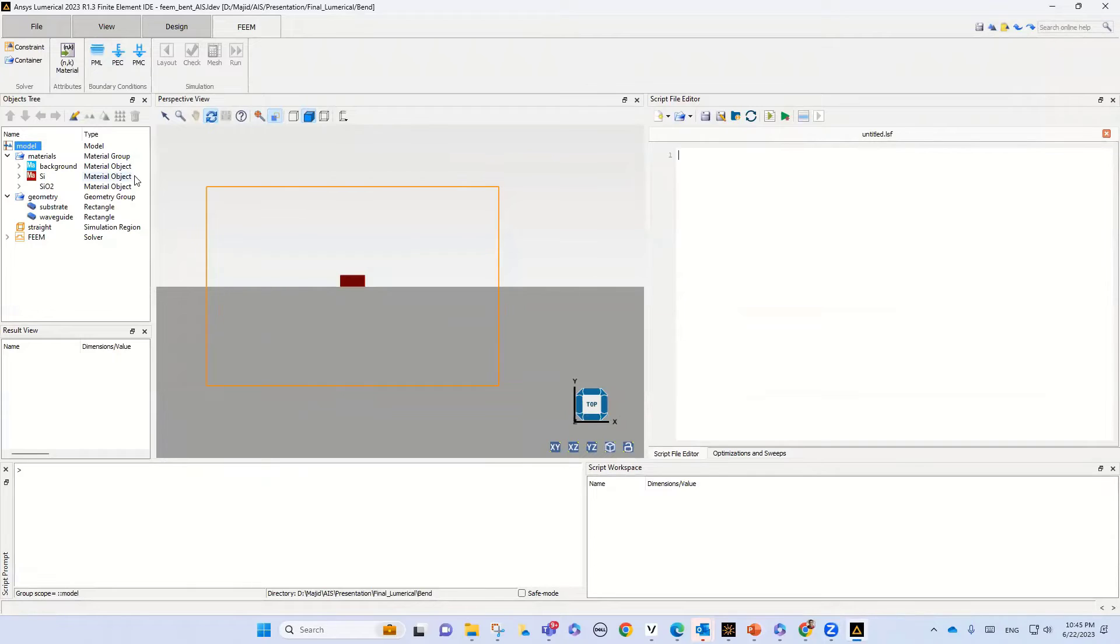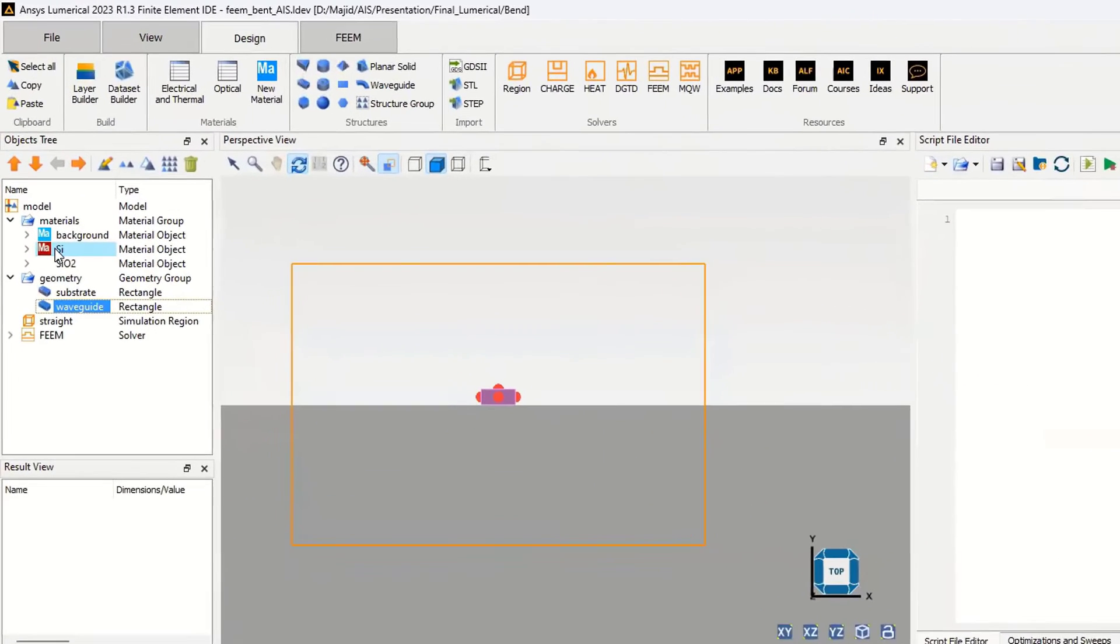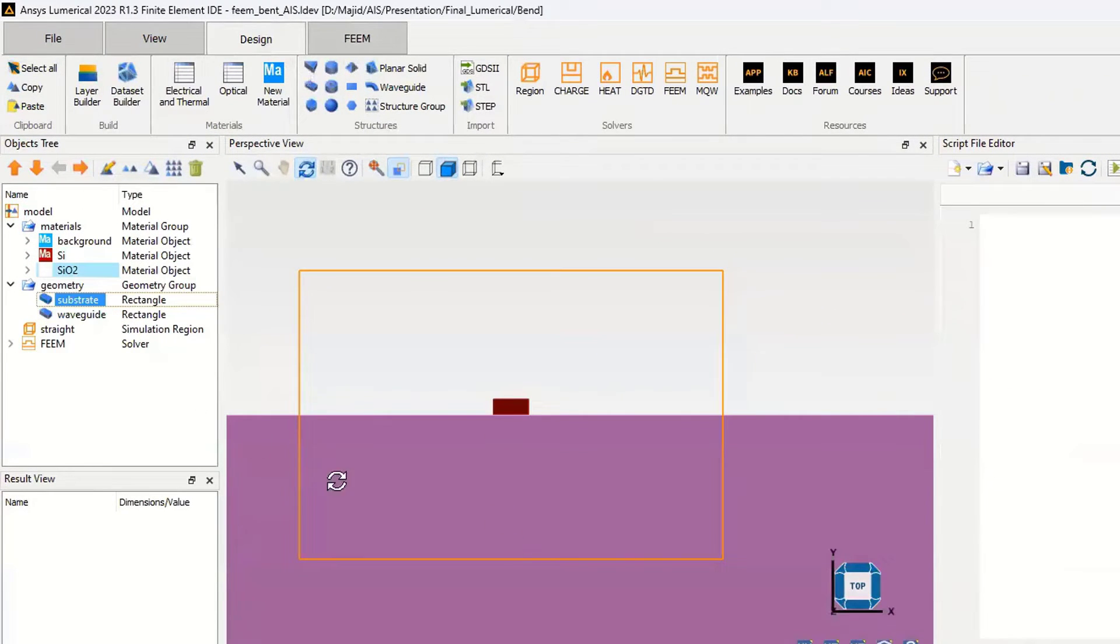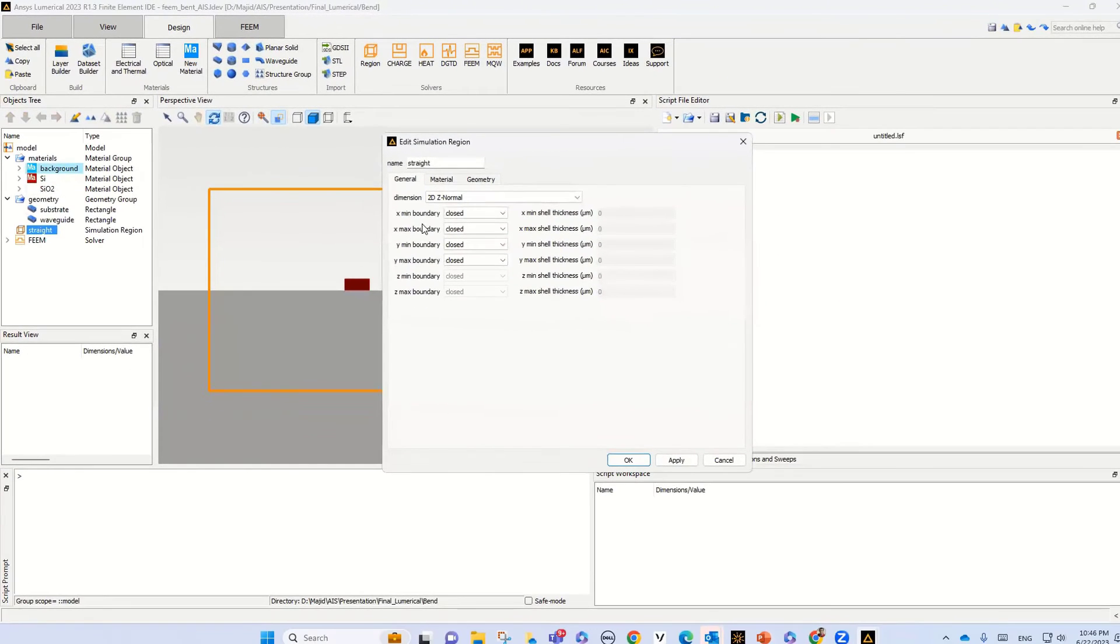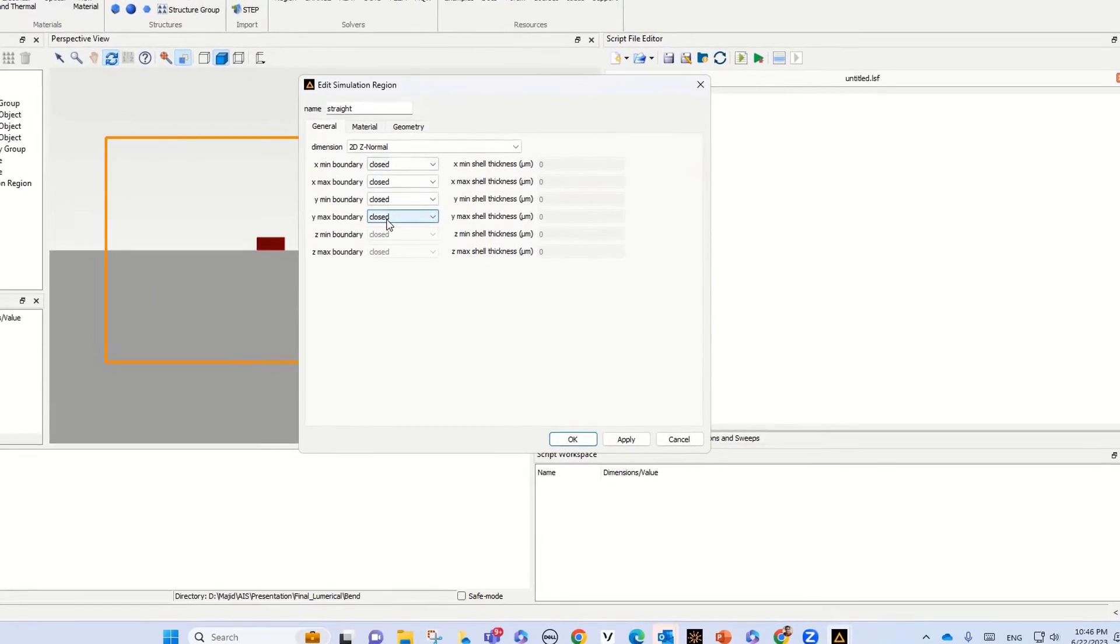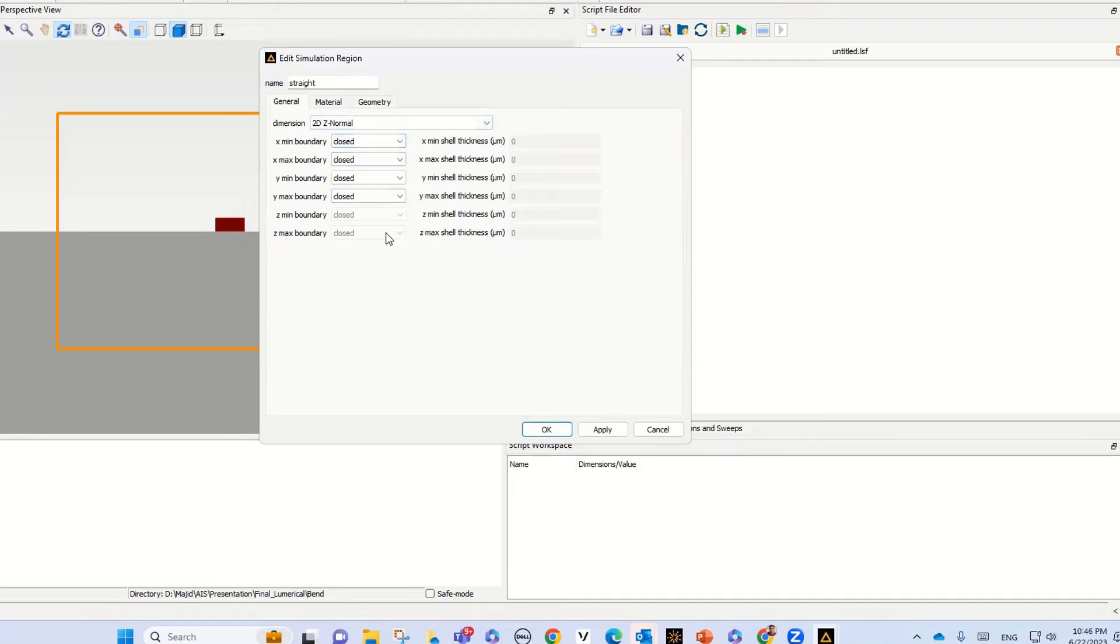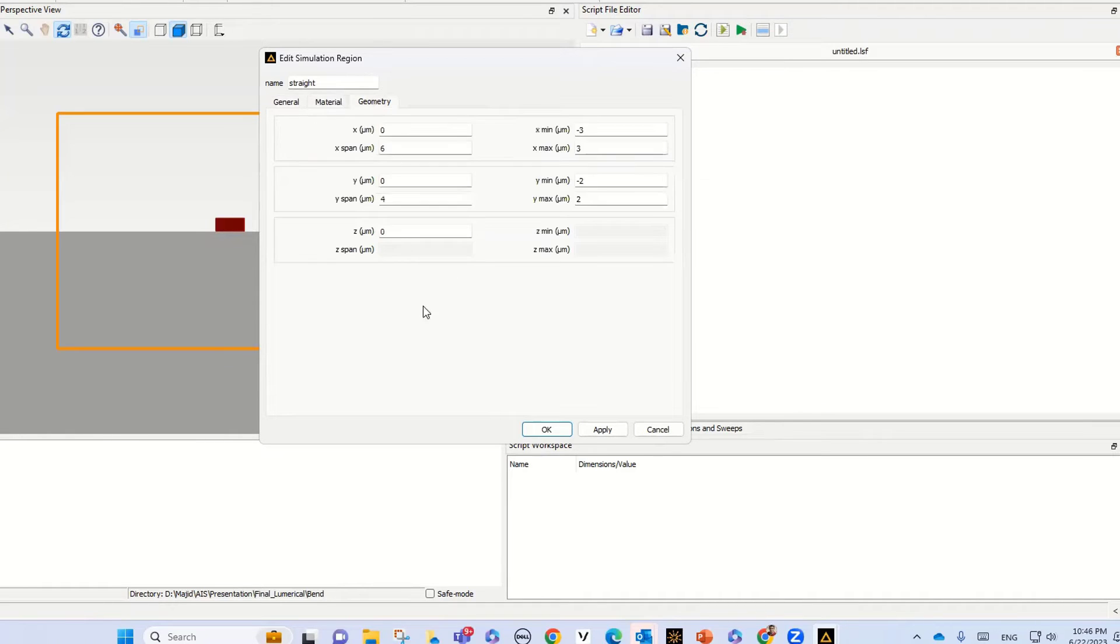So this is the numerical simulation. Please review my first video regarding the numerical simulation where we design a waveguide - just for a brief review. This is our waveguide, our waveguide is silicon, and this is our substrate which is SiO2. This is our simulation region. The boundary condition of X and Y is closed to simulate just the specific region.